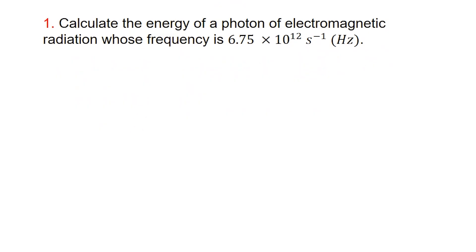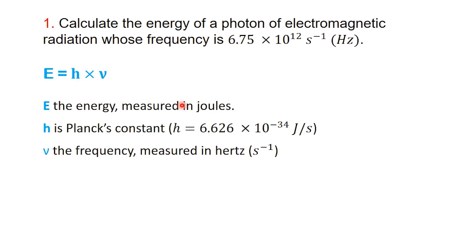Let's begin with the first problem. Calculate the energy of a photon whose frequency is 6.75 times 10 to the power of 12 per second. To do this, we use the photon energy equation E equals H times nu. E stands for energy, measured in joules.